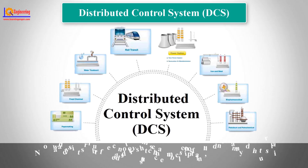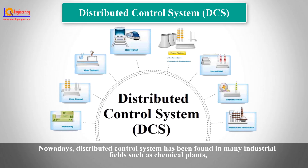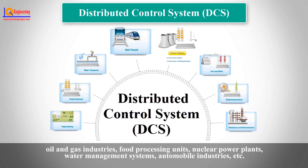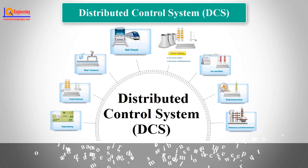Nowadays, distributed control systems have been found in many industrial fields such as chemical plants, oil and gas industries, food processing units, nuclear power plants, water management systems, automobile industries, and more.